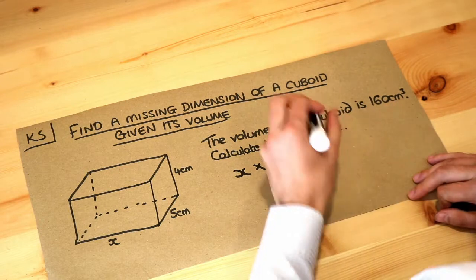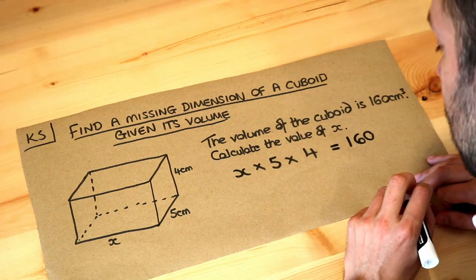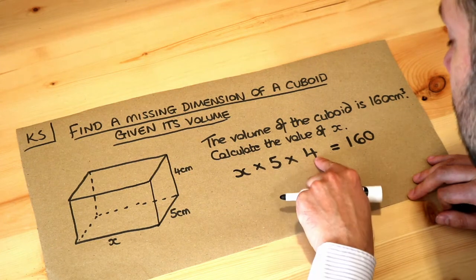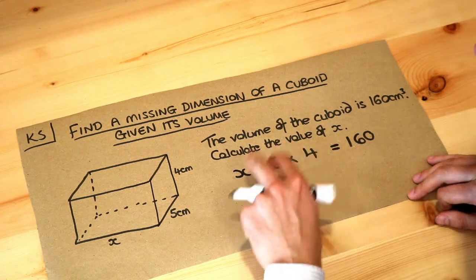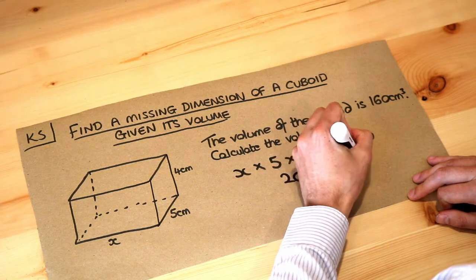But we know that the volume is 160 so we can write equals 160. Now if we just simplify this, 5 times 4 is 20, 20 times x is 20x, so we've got 20x is 160.